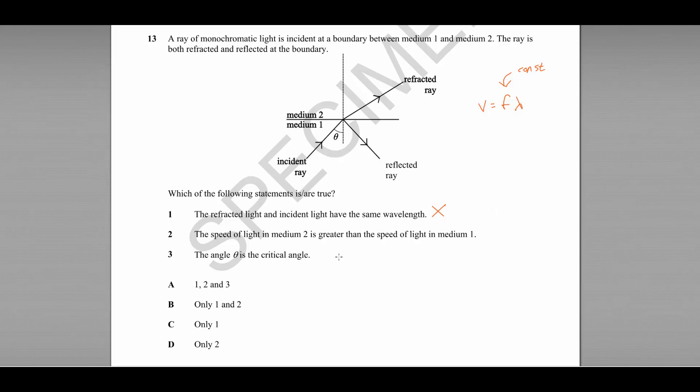Number 2, the speed of light in medium 2 is greater than the speed of light in medium 1. Well, if the speed of light in medium 2 is greater, that causes the angle to get greater.